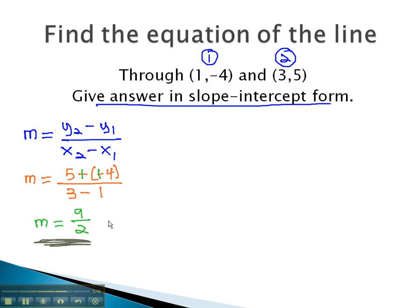Using our slope and either one of our points, we can find the equation of the line. Because we do not know the y-intercept, we must use the equation y minus y1 equals m times x minus x1. Plugging in our information, y minus y1, which is negative 4, minus a negative is the same as adding 4, equals m, or the slope, 9 halves, times x minus x1, which is 1.